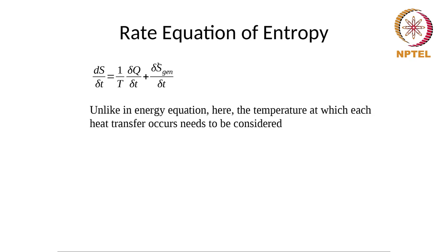There is one key difference here compared to the first law. In the first law, we had dE/dt = Q̇ - Ẇ, where we could simply write Q̇. But in the entropy equation, each Q is associated with the temperature at which that heat is transferred. Therefore, we cannot just sum all δQ together — we need each Q divided by its corresponding T. So we write Σ(Q̇/T) rather than just Q̇.